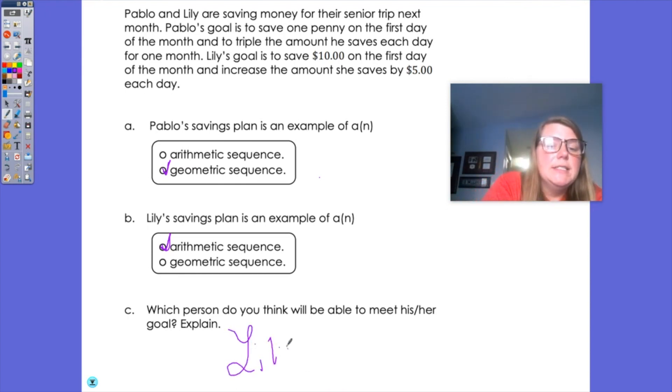And the reason why is Pablo's goal is going to end up being somewhere around $20 million or so, probably more than that. I know when you double a penny, it ends up being $10 million. So it's probably going to be more. And I would assume that if he's trying to save money, he doesn't have that much money to save. So I would definitely think Lily would be more rational to be able to save for that month for her goal.